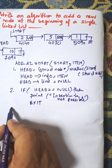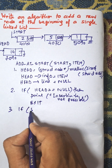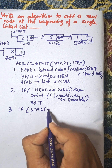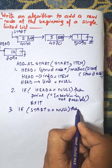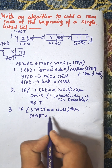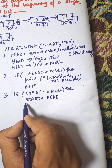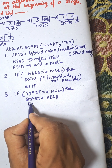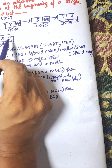Step 3: If start equals null, then start will be assigned the address of head, and exit. This handles the case where the linked list is initially empty.